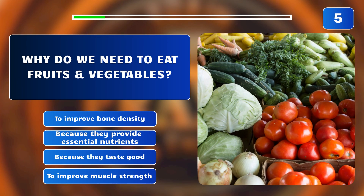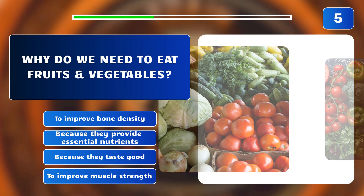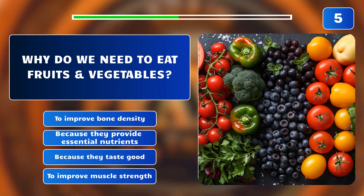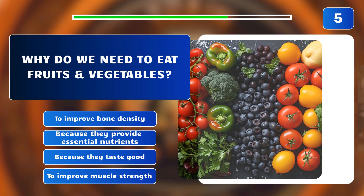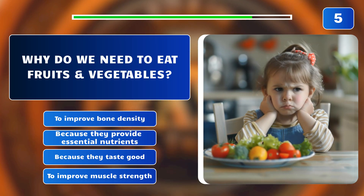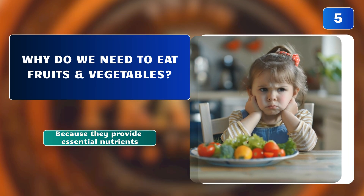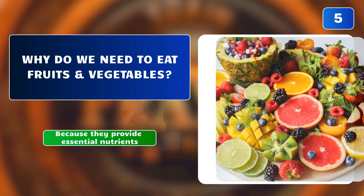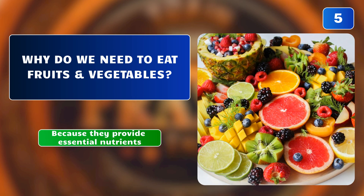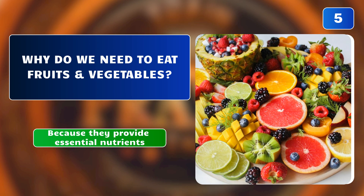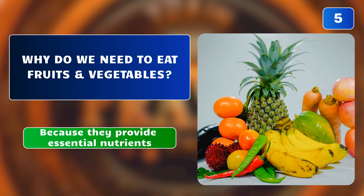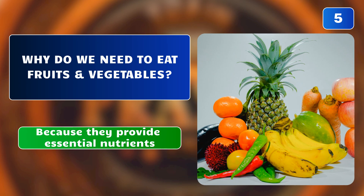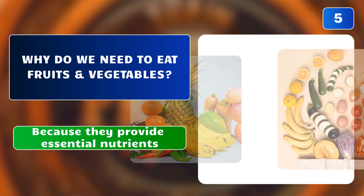Why do we need to eat fruits and vegetables? To improve bone density? Because they provide essential nutrients? Because they taste good? Or to improve muscle strength? The correct answer is: because they provide essential nutrients. Fruits and vegetables provide essential nutrients, vitamins, and fiber necessary for maintaining good health.